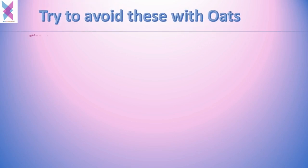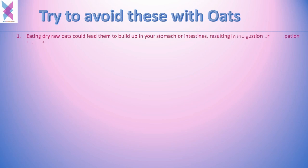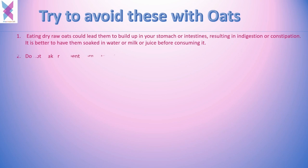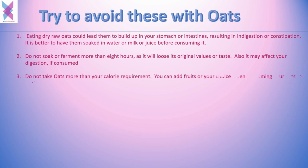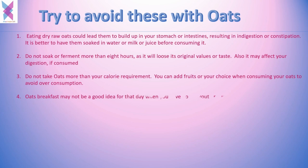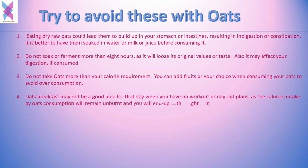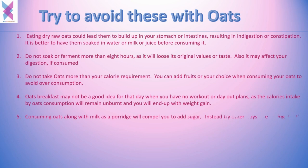Eating dry oats could lead to buildup in your stomach or intestines, resulting in indigestion or constipation; it is better to soak them in water, milk, or juice before consuming. Do not soak or ferment for more than eight hours as this affects the taste and nutritional value. Do not consume oats beyond your calorie requirement. You can add fruits of your choice to avoid overconsumption. An oat breakfast may not be ideal on days with no workout or physical activity, as the calories will remain unburnt. Try having oats with juice or curd or as a cooked dish rather than as a sugary porridge.